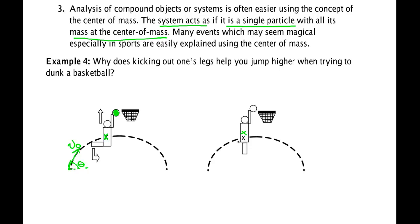Because there is no net external force other than gravity, and we've already accounted for gravity through the parabolic path, the center of mass cannot change its location with respect to the ground — it has to stay on the parabolic path. That means if the center of mass goes down, the rest of the body has to go up. So the basketball goes up, clears the rim, and he can dunk.